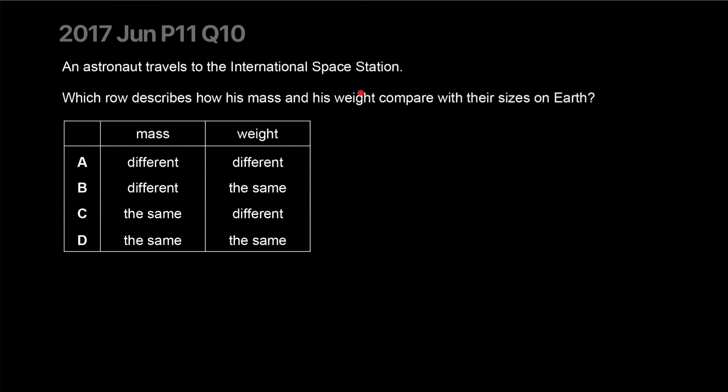An astronaut travels in the international space station, which describes his mass and weight compared to their sizes on Earth. The mass is going to be the same. Even though they're bouncing, the mass does not change. Mass is amount of substance. He's not less of a man if he's in space. You're not less of a person. So that's always going to be the same. Normally, unless nuclear reactions, these things don't really change.